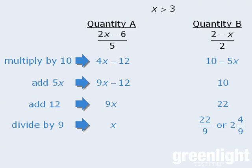So which quantity is bigger here? Well, since we're told that x is greater than 3, we can be certain that x is greater than 2 and 4 ninths, which means the correct answer here is A.